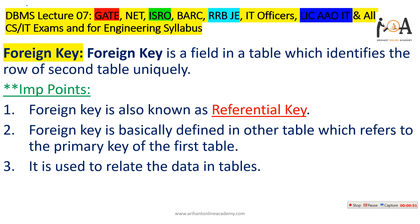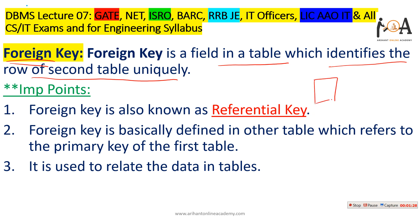Let's start the concept of foreign key. All the keys like candidate keys, primary keys, and alternative keys have been discussed in lectures one to six, so you can watch those if needed. The foreign key is basically a field in a table which identifies the row of a second table uniquely. We will see this with examples so that you can understand the concept well.